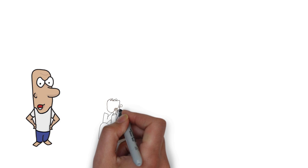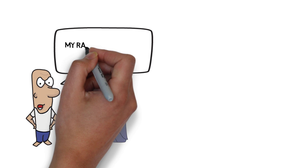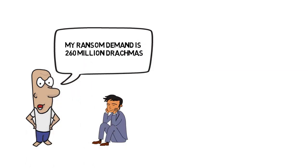In 1995 he kidnapped a billionaire factory owner and demanded a ransom of 260 million drachmas, which is about £1.2 million in today's money. The ransom was paid and the businessman was released. He distributed some of the money to local farmers, orphans and the homeless.